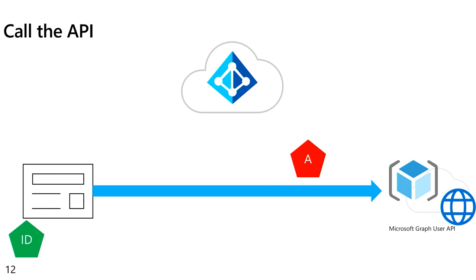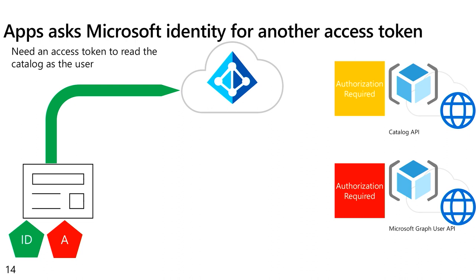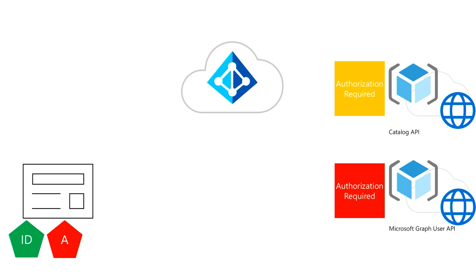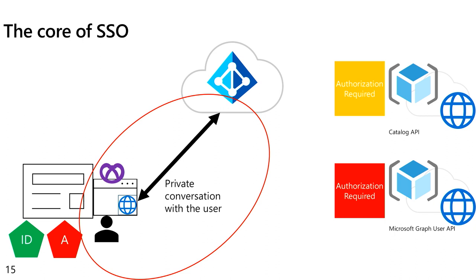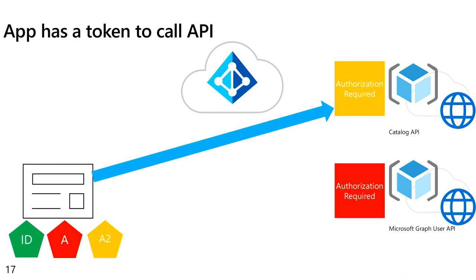What do you do if you have to call another API? It's actually the same trick. We're going to talk to Azure Active Directory and say, I need an access token to be able to call the catalog API. There's another private conversation — this might be hidden for the user, or it could be visible if it has to ask for permission. Or perhaps an administrator set up a conditional access policy requiring multi-factor authentication to call this catalog API. If everything pans out, we're going to give you another access token.